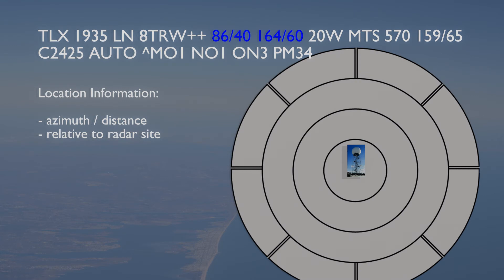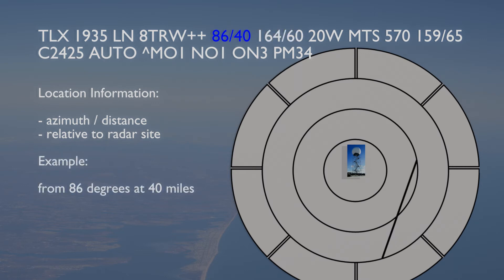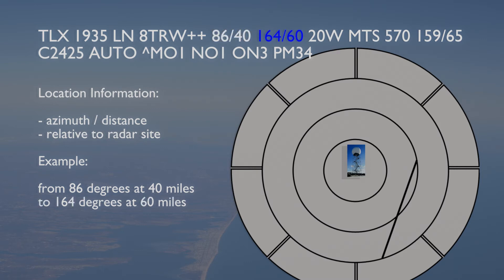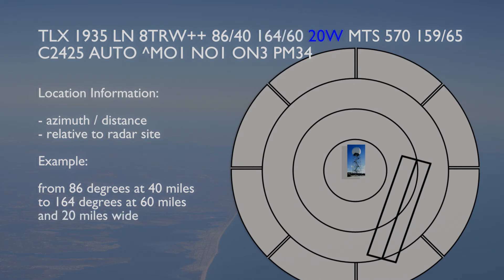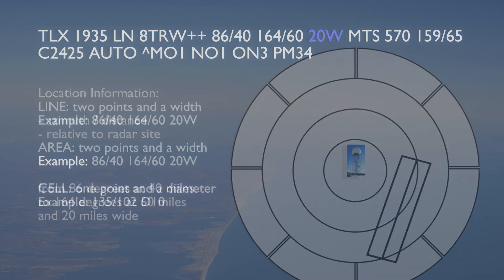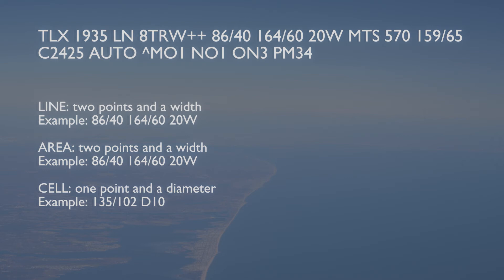Location information is now added in the form of azimuths and distances from the radar site. In this case, the line of rain showers extends from a point 86 degrees and 40 miles from the TLX radar site, or roughly 40 miles east of Norman, to a point 164 degrees and 60 miles from the TLX radar site, which is 20 miles in width. An area of weather will also be described as two points and a width. A weather cell, however, will be coded as an azimuth and distance with the diameter of the cell. For example, this code describes a cell 135 degrees and 102 miles from the radar site, which is 10 miles in diameter.